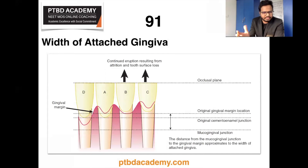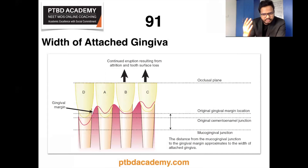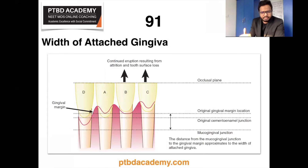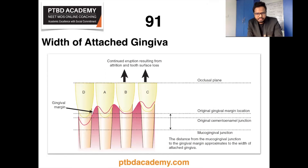This illustration represents the relation between the gingival margin and the crown and root surface. We can identify the occlusal plane, original gingival margin location, original CEJ location, muco-gingival junction, and most importantly the width of attached gingival — represented by the distance from the muco-gingival junction to the gingival margin.